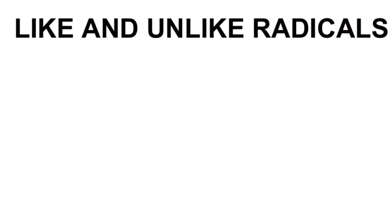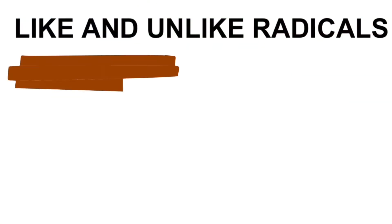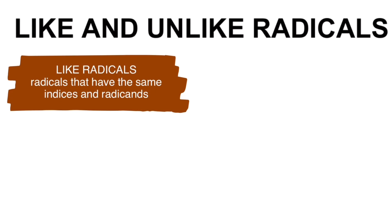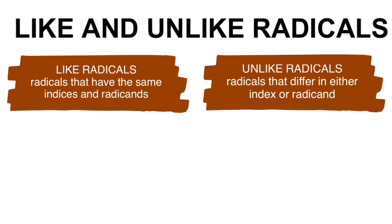If we say like radicals, these are radicals that have the same indices and the same radicand. On the other hand, if we say unlike radicals, these are radicals that differ in either the radicand or the index.